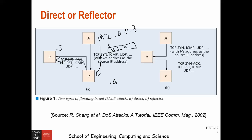In the reflector case, the attacker will flood packets to the receiver. He will send the same message with a spoofed IP address — say this one is 3, this one is 4, and this one is 5. He will send the SYN request and put the victim's IP address, so the receiver will send SYN-ACK to the victim. There are different types of attack, not only TCP.